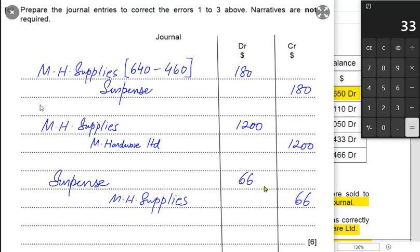Instead of debiting discount allowed, we debit suspense. This is because the discount was correctly recorded in the cash book — discount and bank accounts in the cash book were correctly used — so we correct it by way of the suspense account.